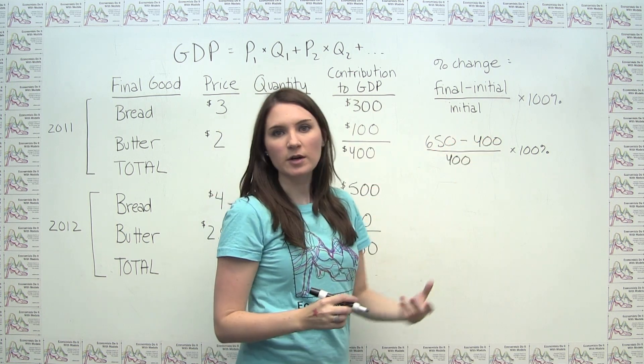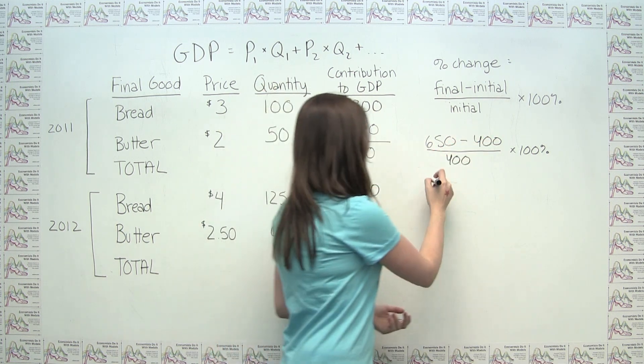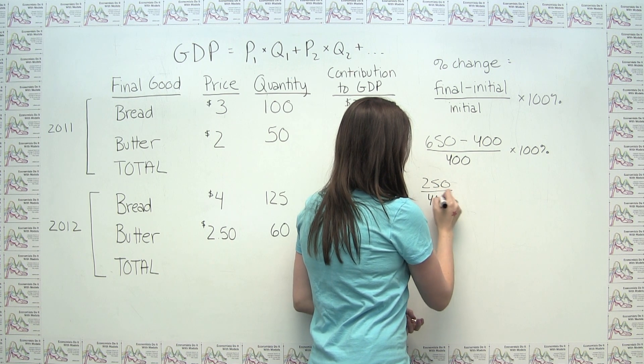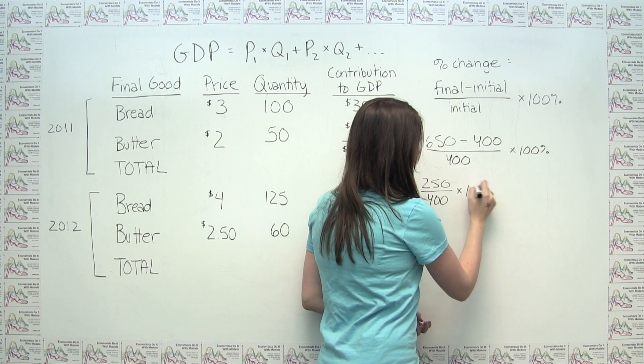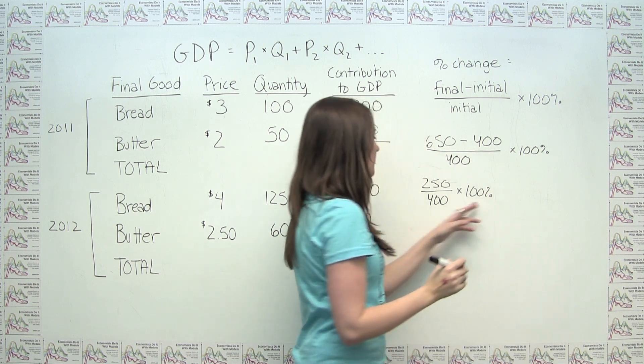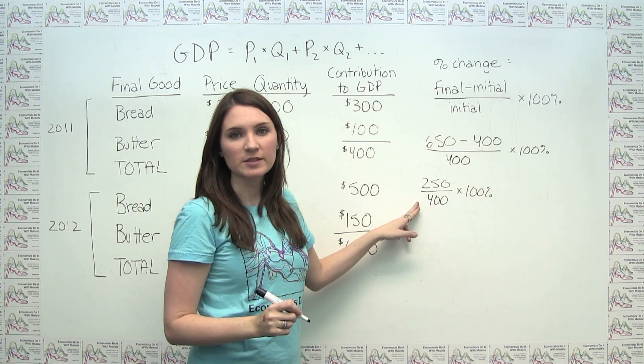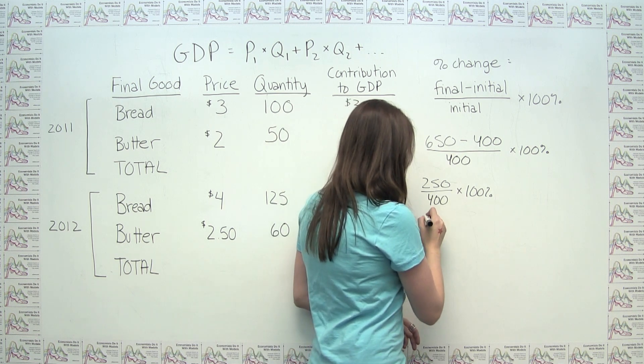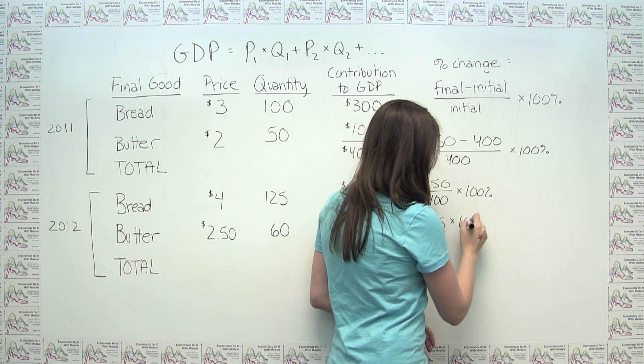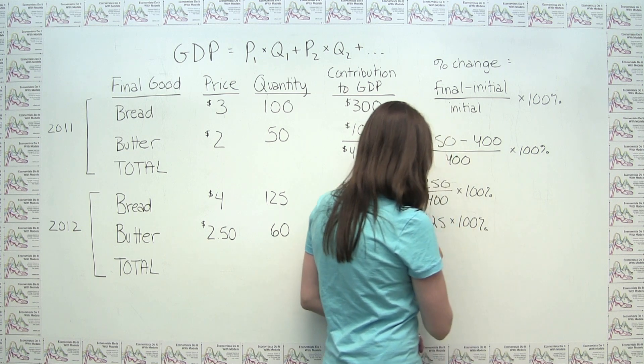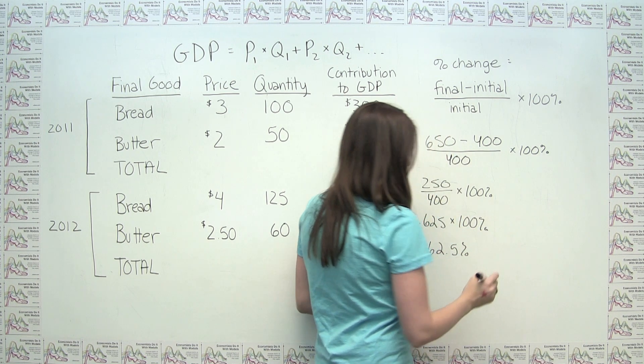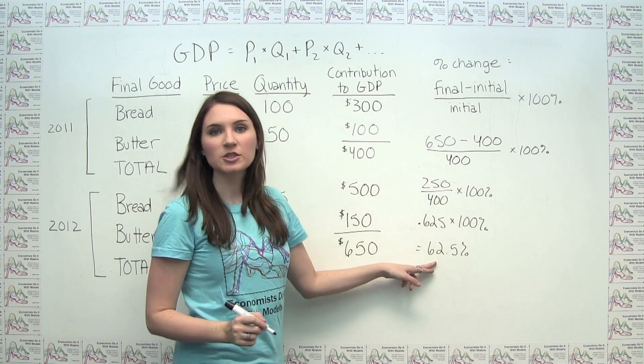650 minus 400 is just 250, so this is just 250 over 400, times 100%. If we do 250 divided by 400, this actually gives us .625 times 100%, which is equal to 62.5%.